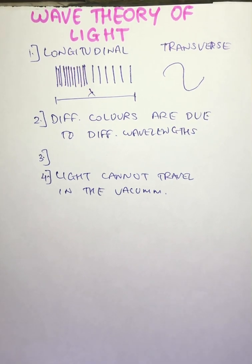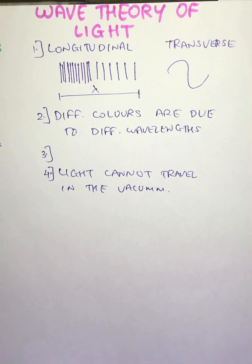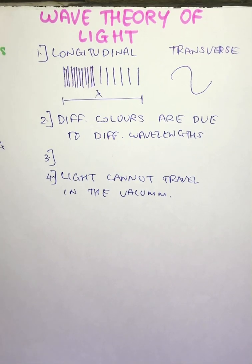These are all the characteristics of wave theory of light. Wave theory of light was not completely correct, it had certain drawbacks, but it was successful in explaining the laws of reflection, refraction, interference, and diffraction. The wave theory predicted that speed of light in an optically denser medium is less than that in an optically rarer medium.